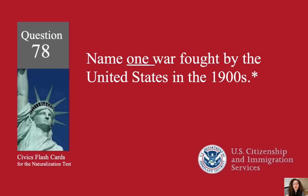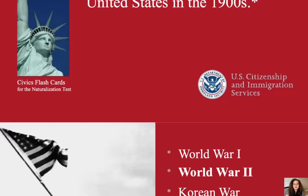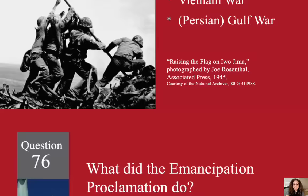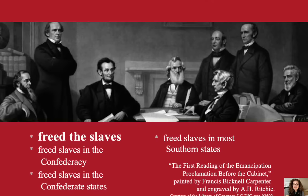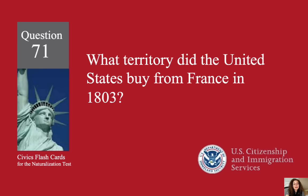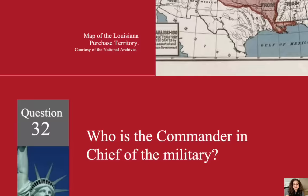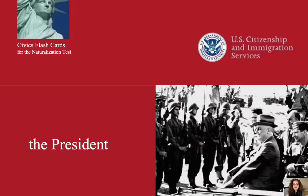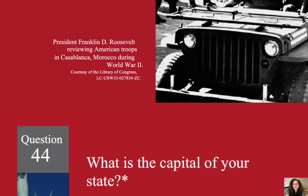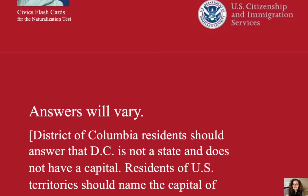Name one war fought by the United States in the 1900s. World War II. What did the Emancipation Proclamation do? Freed the slaves. What territory did the United States buy from France in 1803? Louisiana. Who is the commander-in-chief of the military? The President. What is the capital of your state? Answers will vary here. Please find the capital of your state.